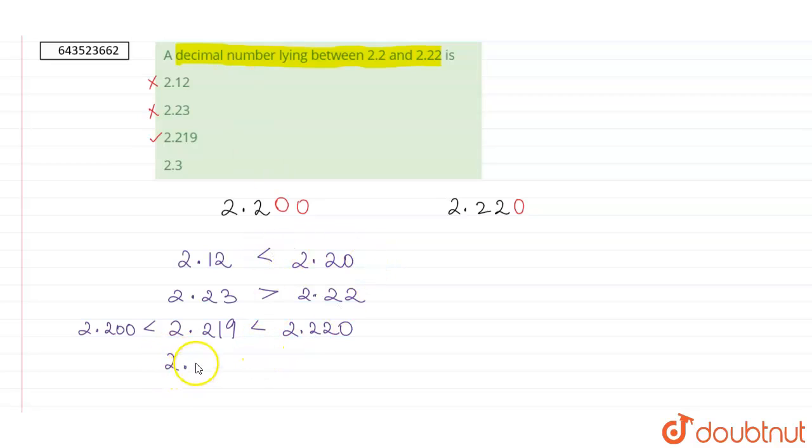The next number is 2.3. I can write 2.3 as 2.30. Now 2.30 is greater than 2.2, which can also be written as 2.20, and it is also greater than 2.22, so it does not lie between 2.2 and 2.22.